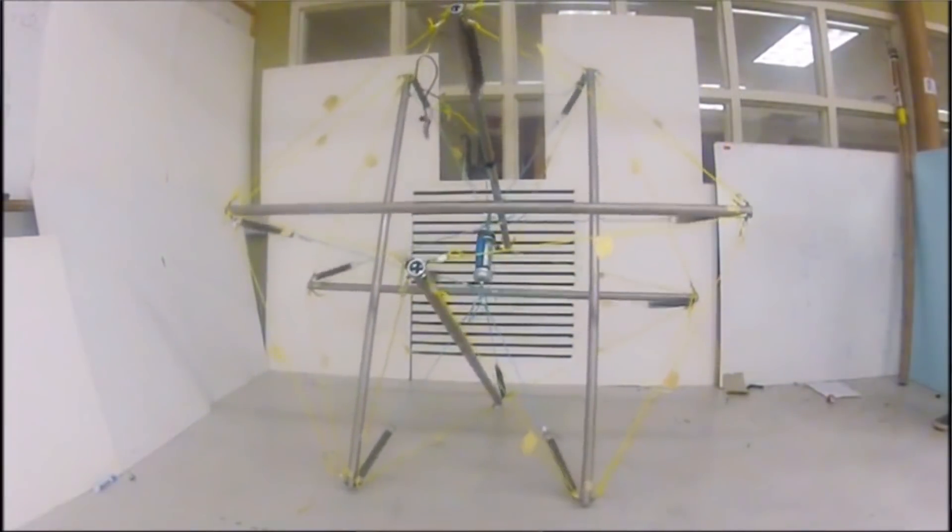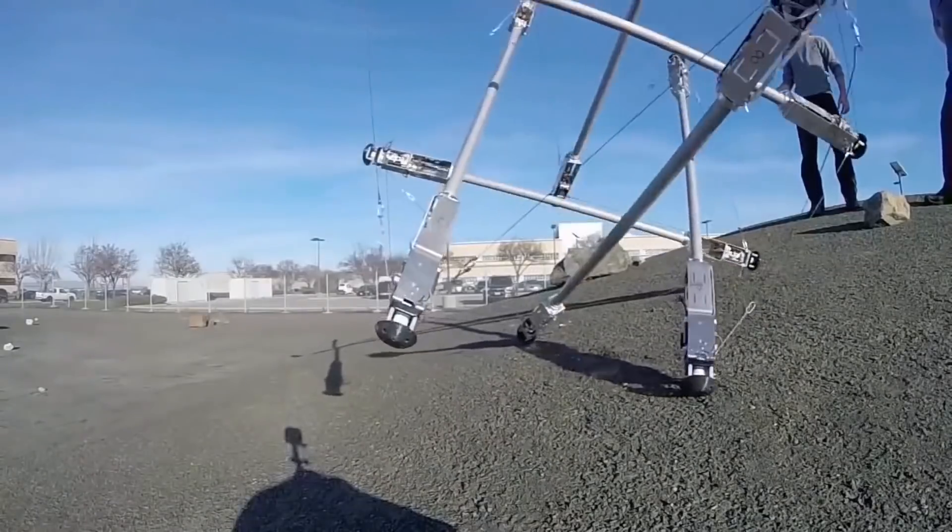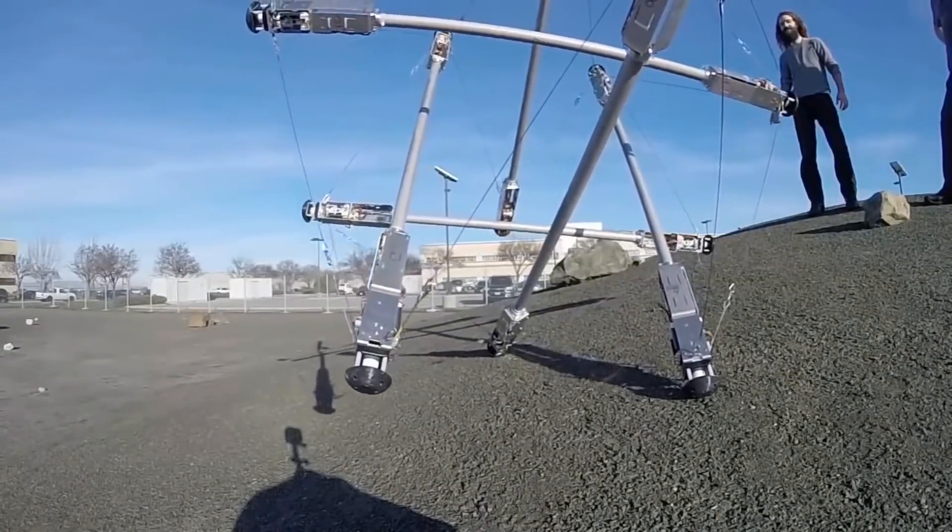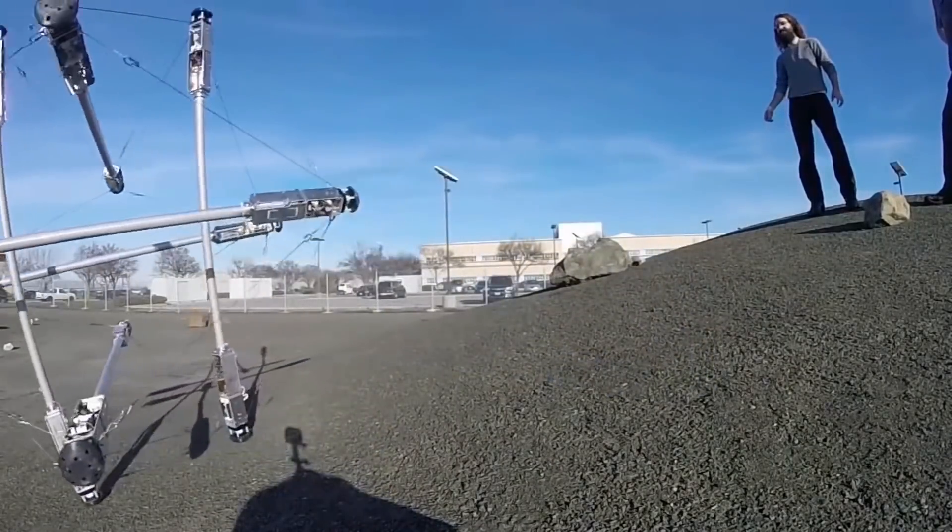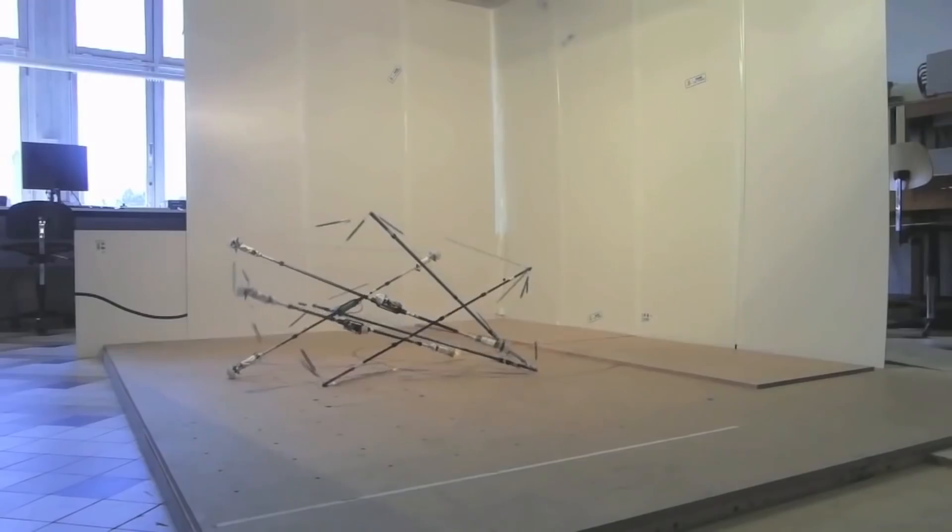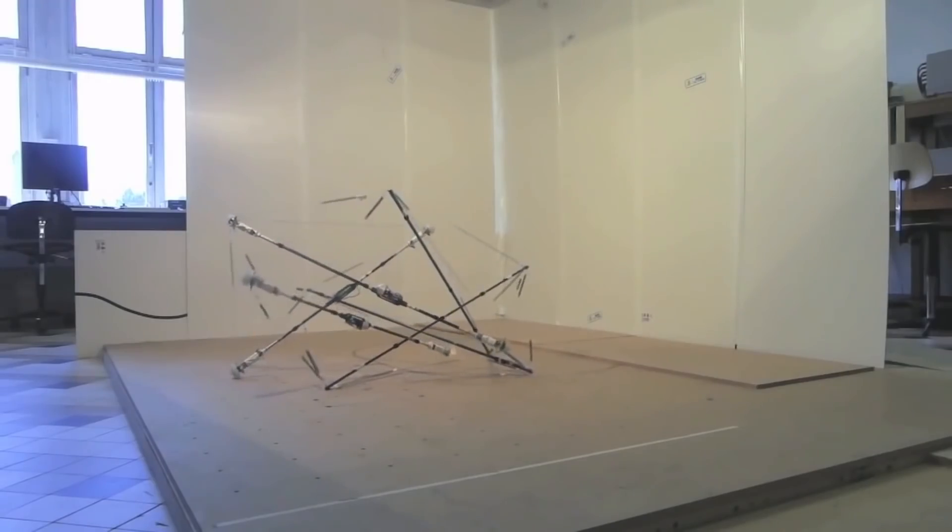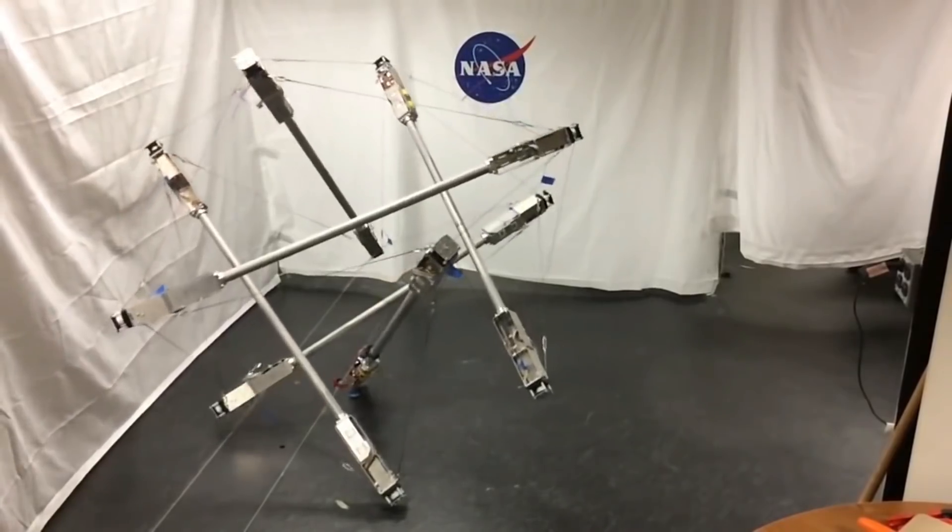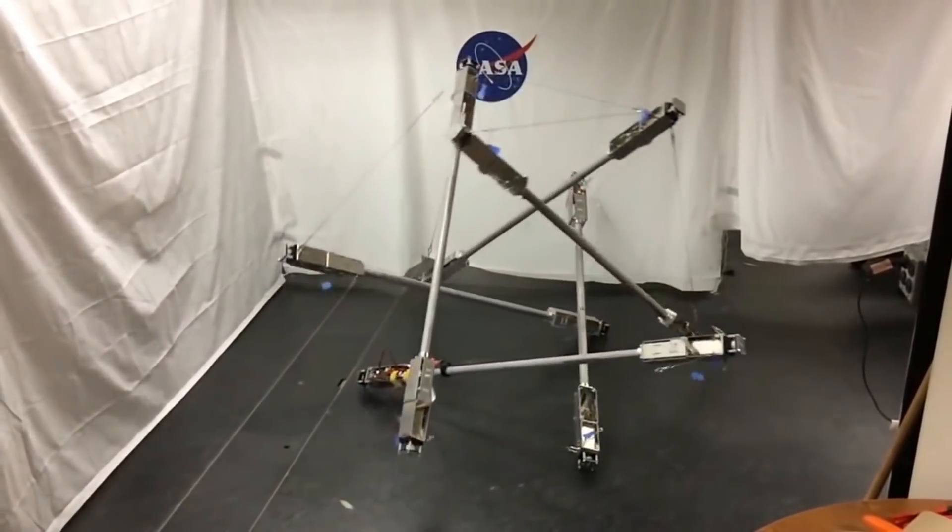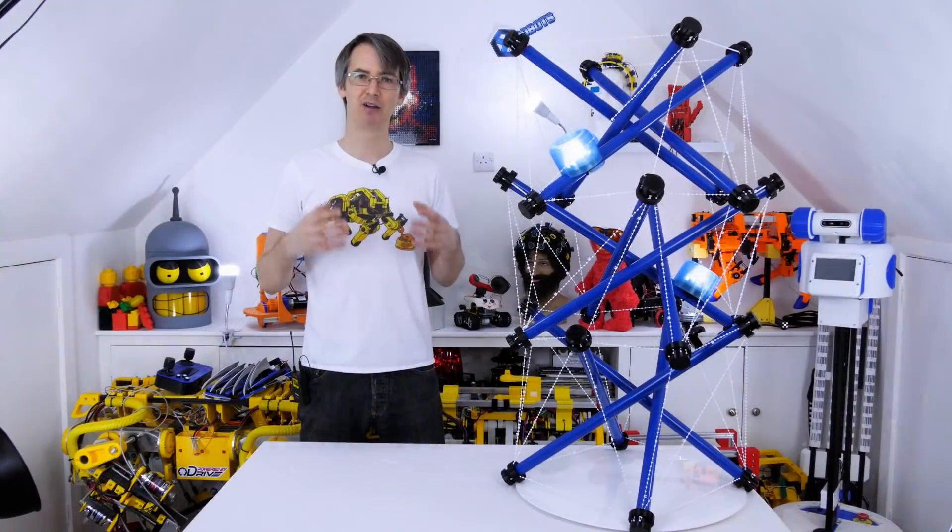Now there are robots that actually use tensegrity as their structure so you can check those out on YouTube just by searching for tensegrity robot, mostly research machines, but the point is they can roll all over so for something like exploring Mars they can handle rough terrain just by altering the lengths of those tension cords.